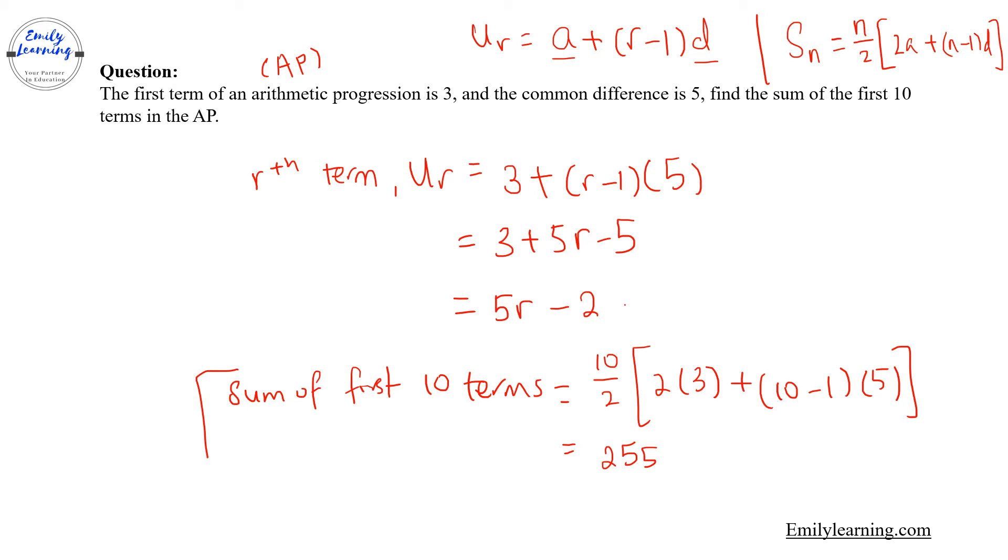Or you can use the GC. So if you want to use the GC instead of writing this, you can write by GC: sum of first 10 terms equals summation of r equals 1 to 10, where the expression for the term is 5r minus 2. So type it into the GC and you will also get 255.